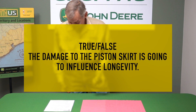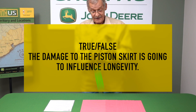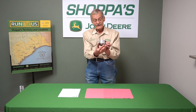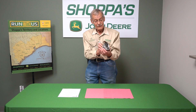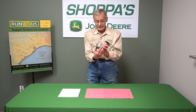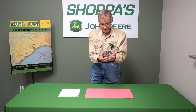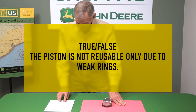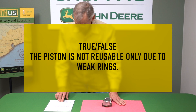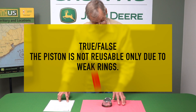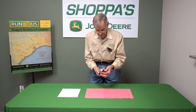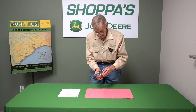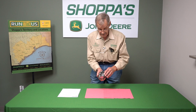Damage to the piston skirt is going to influence longevity — definitely. You see how the skirt's broken on this side; this piston will not function again, or if it does, it will be for a very brief amount of time. Next statement: this piston is not reusable only due to weak rings. That's false. You've got the broken skirt, light signs of galling, and also it seems as though something has contacted the wrist pin boss.